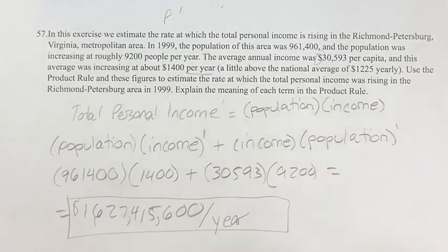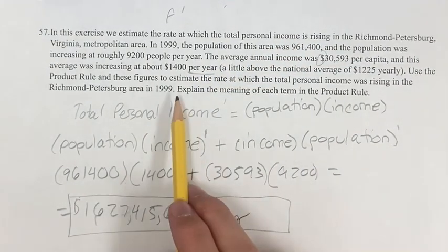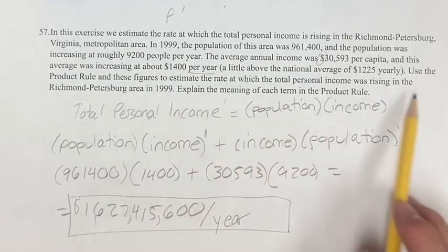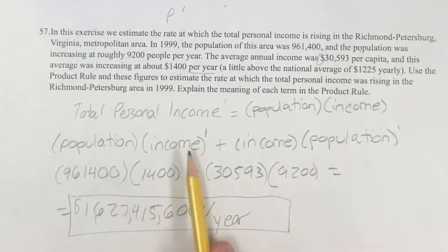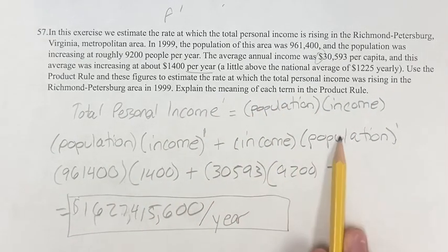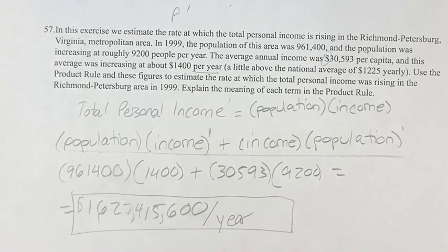So that is going to be your answer. It says to explain the meaning of each term in the product rule, and that's what we did with this intermediate step. As always, thank you for liking and subscribing, and I'll see you in the next video.